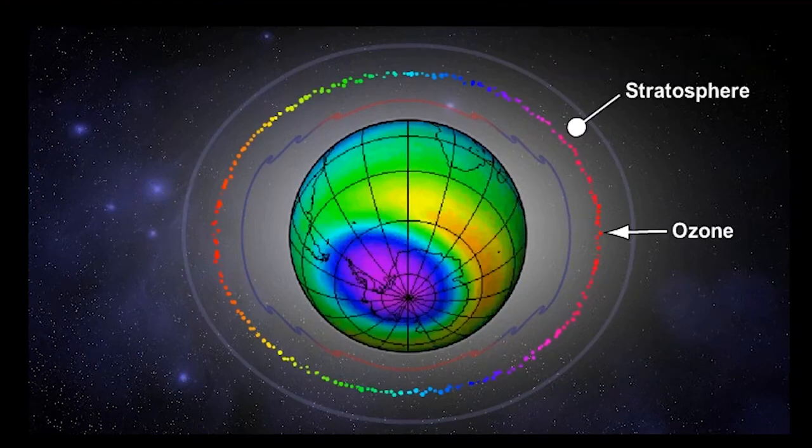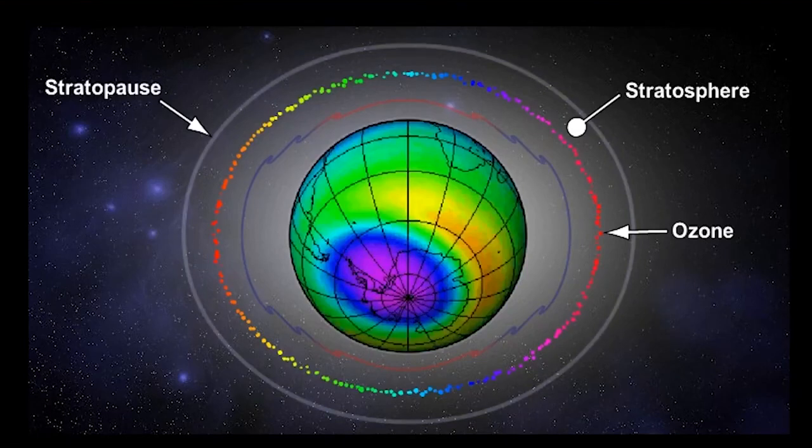Where the temperature starts to fall again signifies the top of the stratosphere, and marks its upper boundary. This boundary is called the stratopause.